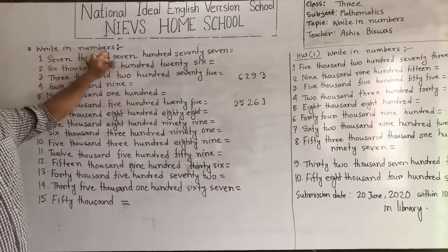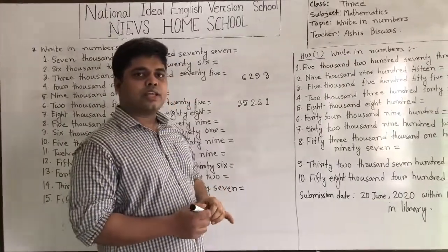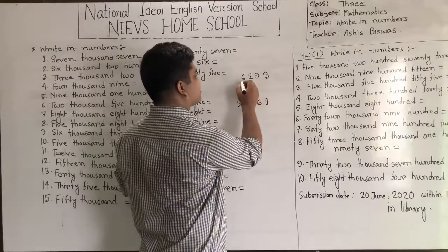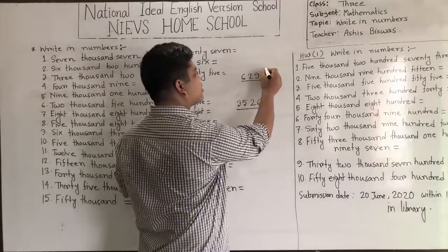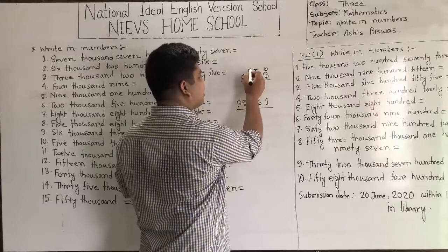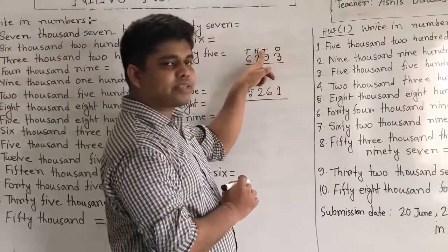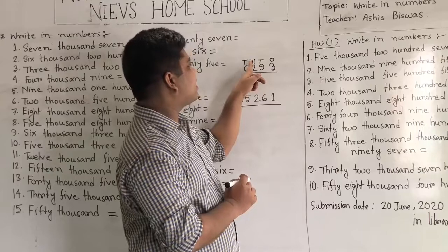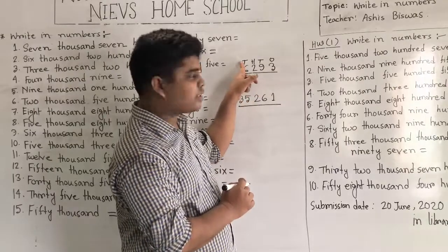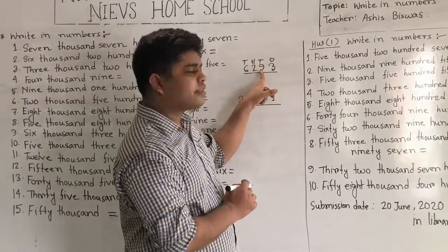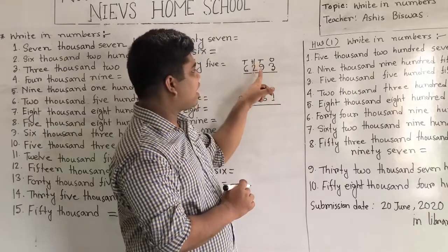Our today's topic is write in numbers. Before starting our class, we shall notice two examples — two numbers. We know the place of numbers: this is the ones place, this is the tens place, this is the hundreds place, and this is the thousands place. We read this number as 6,293.